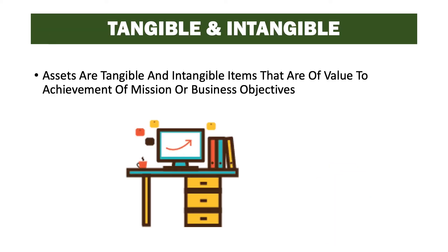Assets are tangible and intangible items that are of value to achievement of mission or business objectives. This can include a number of things that belong to the organization — both physical assets that we call tangible items, like computers, books, and hard drives.